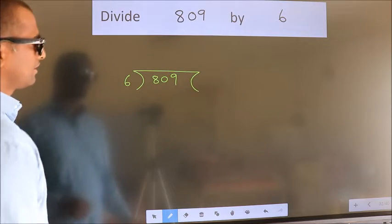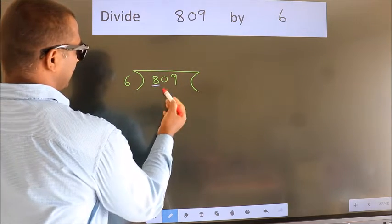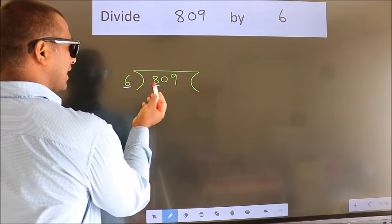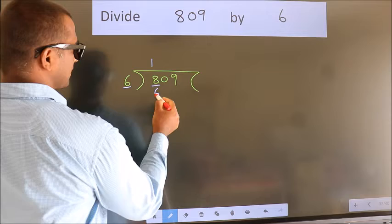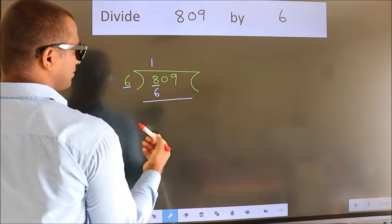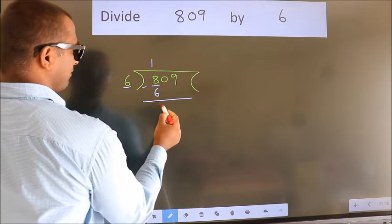Next, here we have 8, here 6. A number close to 8 in 6 table is 6 once 6. Now we should subtract. We get 2.